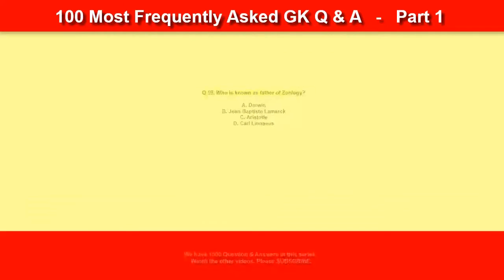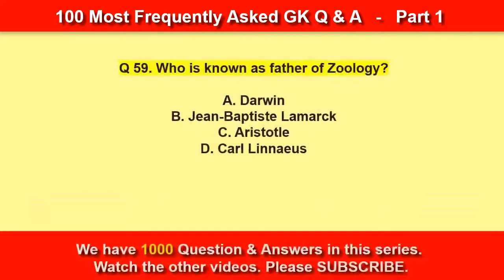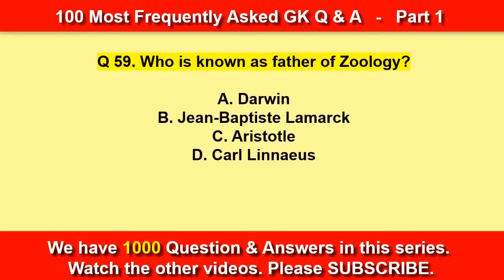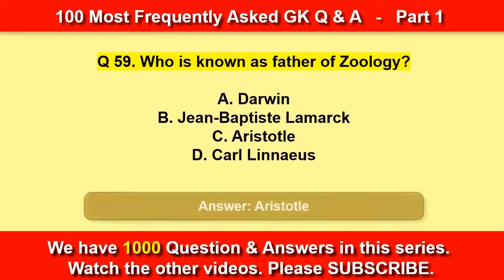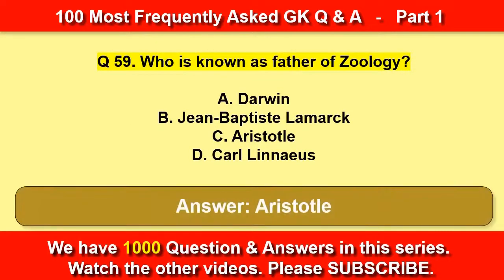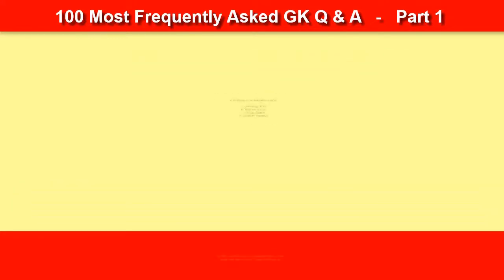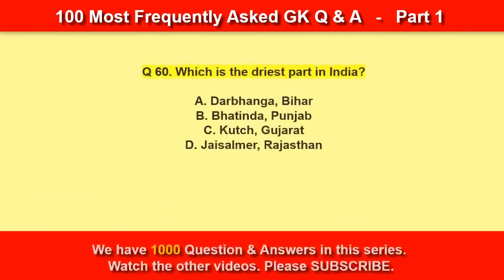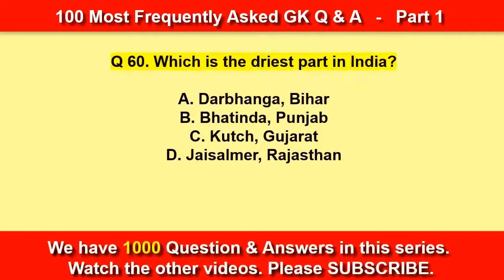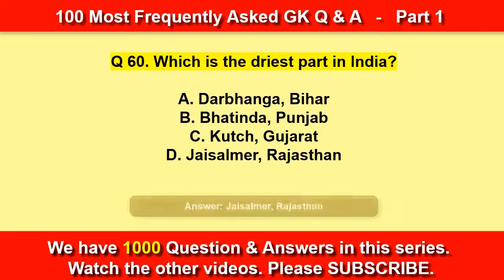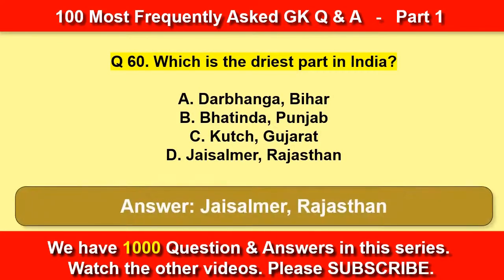Who is known as the father of zoology? Aristotle. Which is the driest part of India? Jaisalmer, Rajasthan.